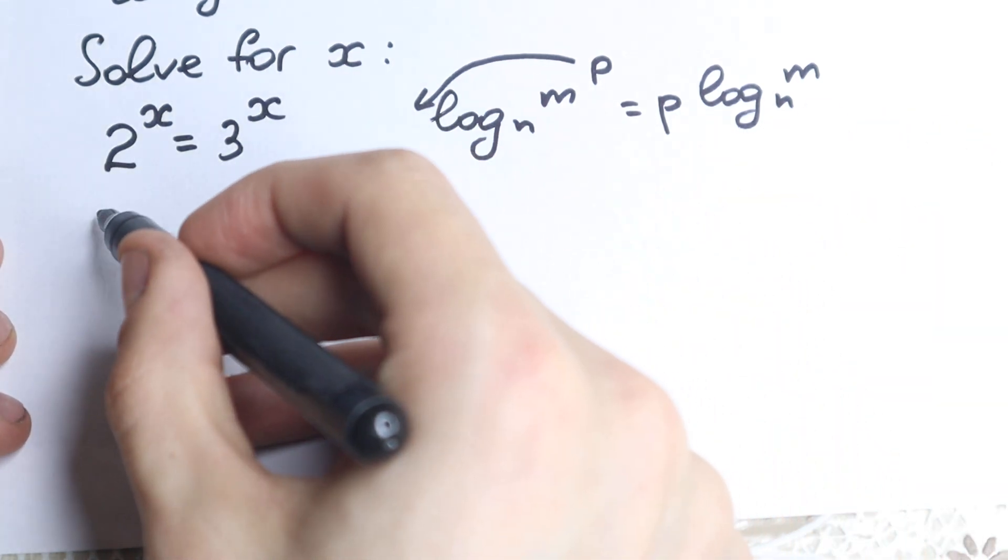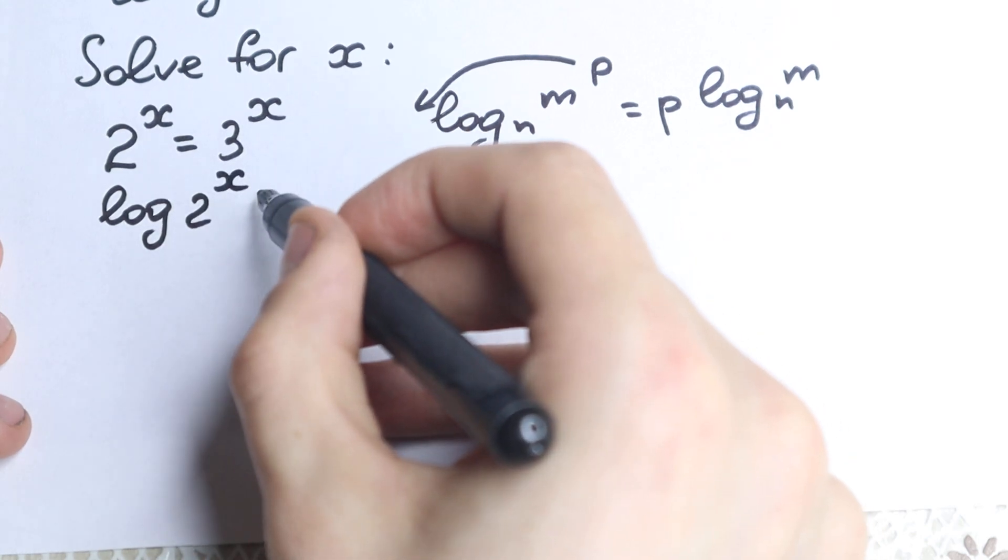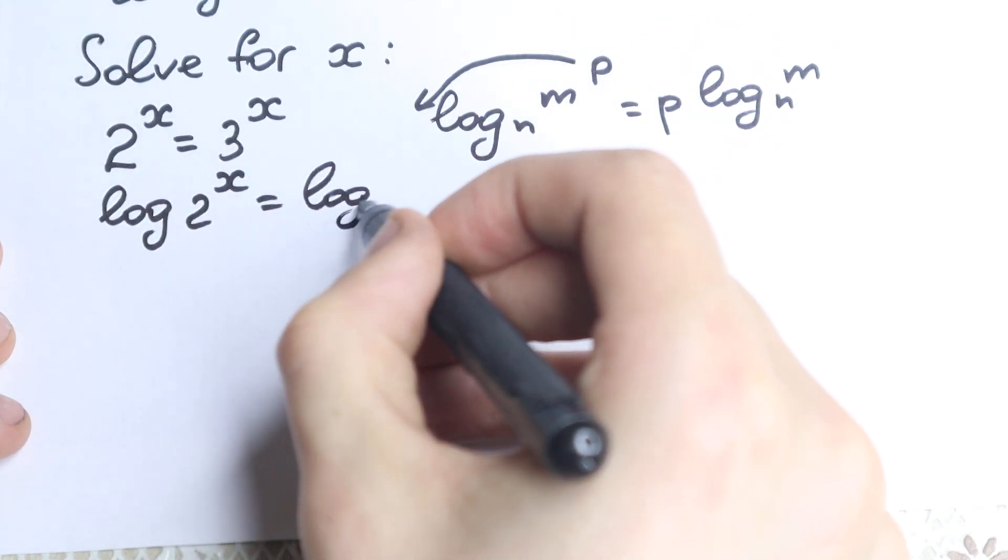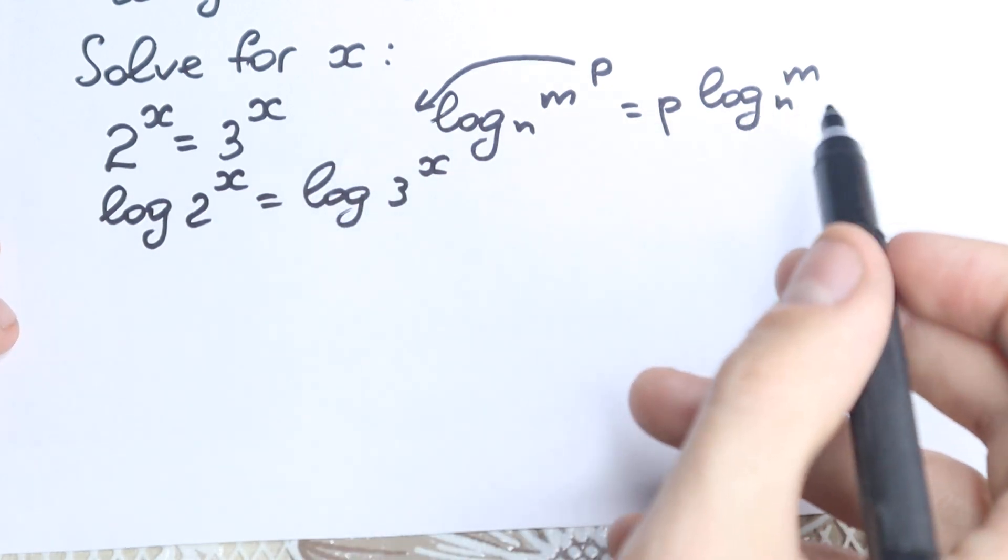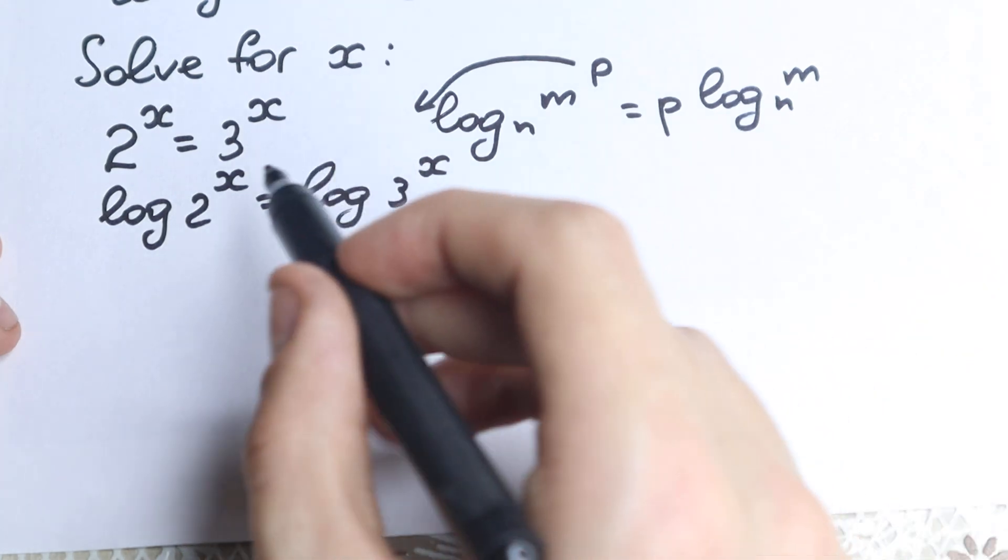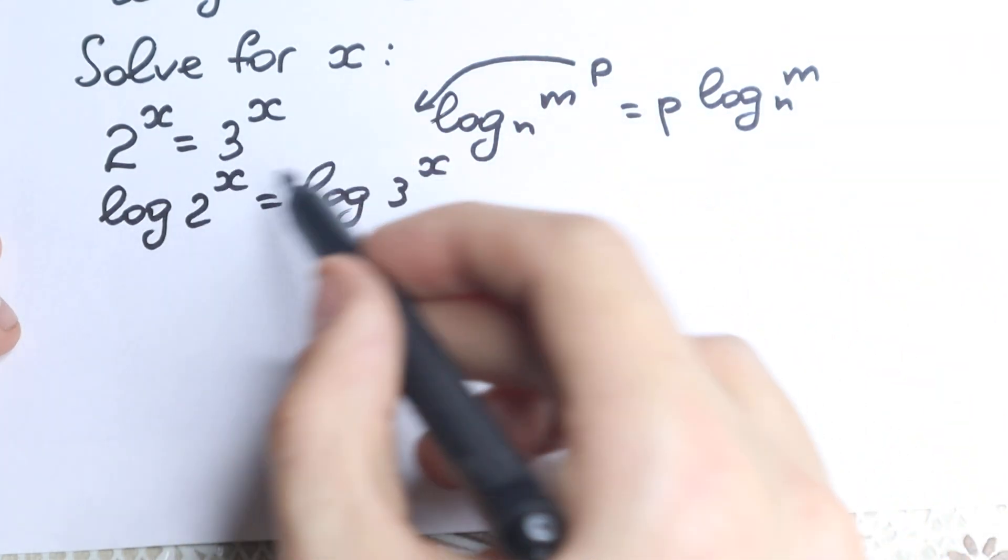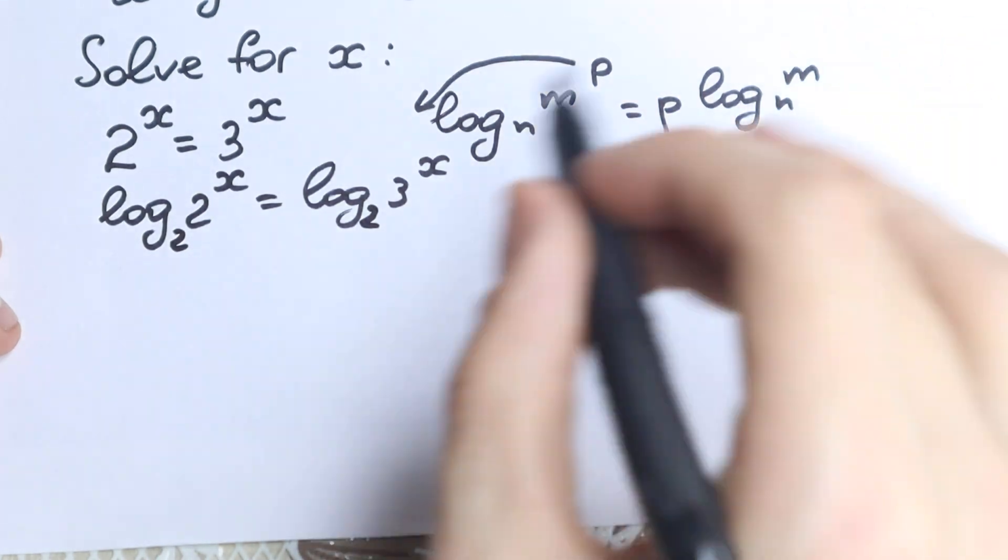So let's apply log on both sides. We have log of 2 to the x equals log of 3 to the x. We need to work with the base, so let's write base of 2. Doesn't matter what base you choose, we'll have the same answer because we apply on both sides. Log base 2 of 2 to the x equals log base 2 of 3 to the x.